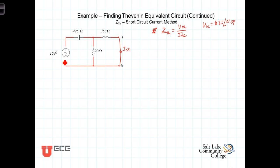What will our approach be? Well, we need to find the current flowing through here. In this circuit, the short circuit current is going to be the current flowing through this J50 ohm inductor.